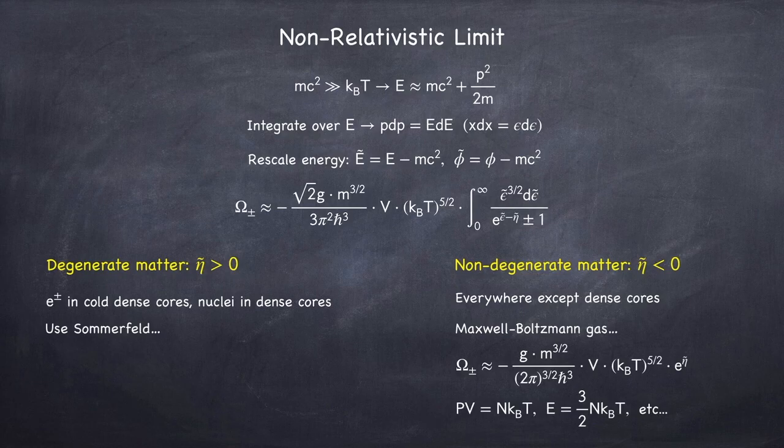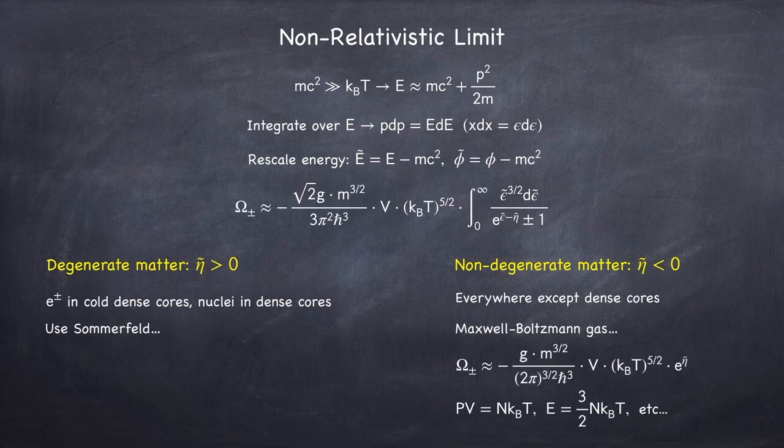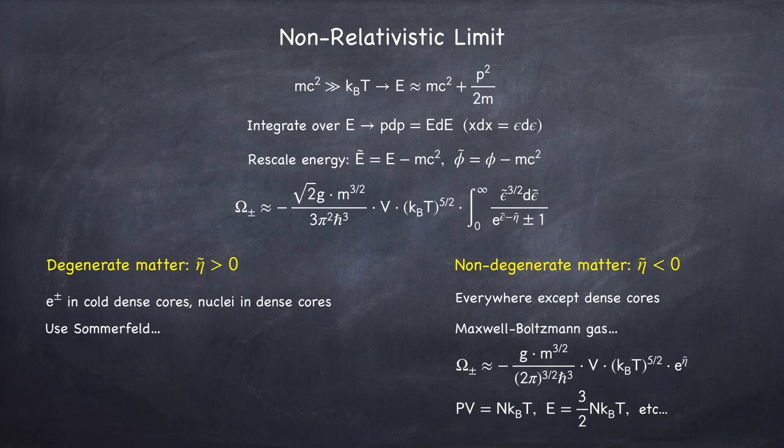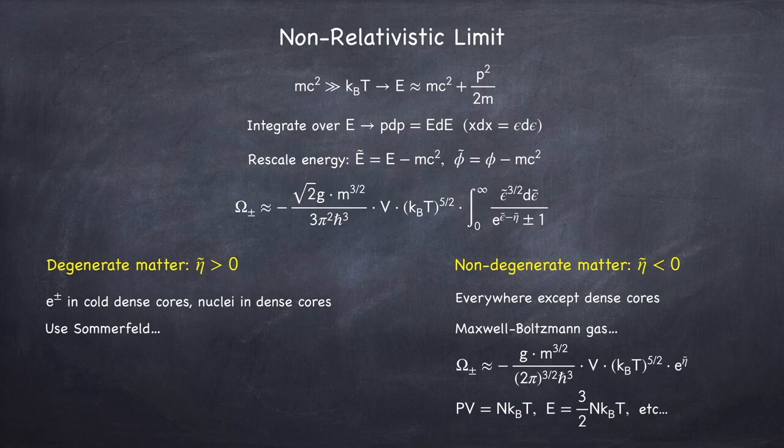mostly because it will be somewhere between relativistic and non-relativistic limit, meaning that the temperature will be approximately the same as the mass. In which case the integral in the land out potential does not reduce to a nice integral.